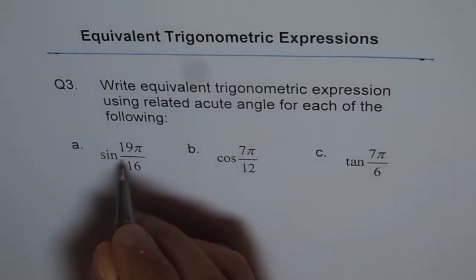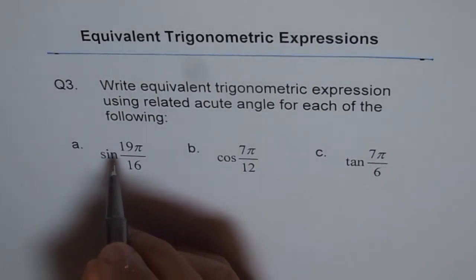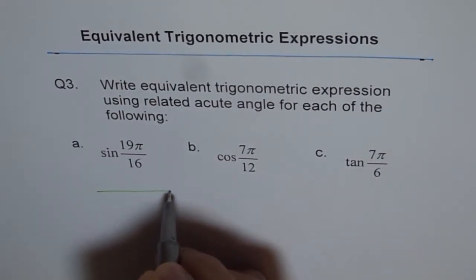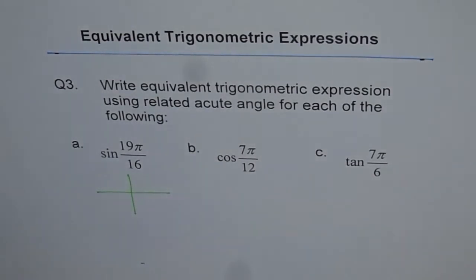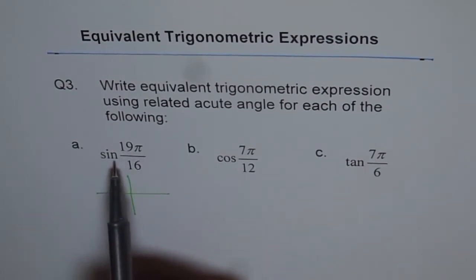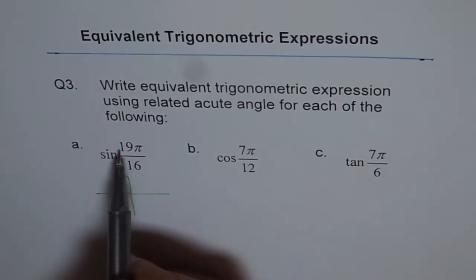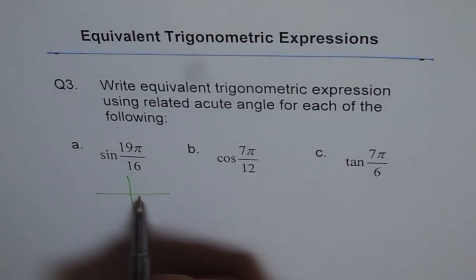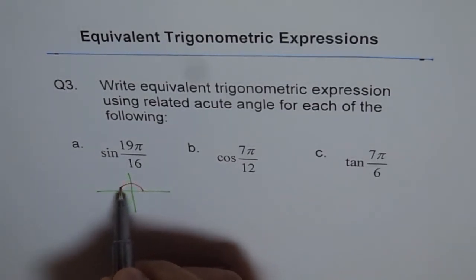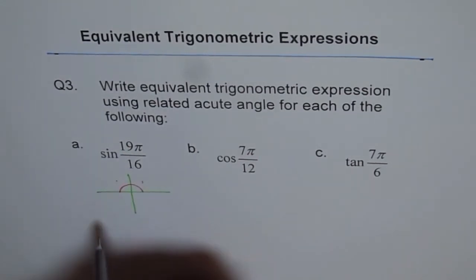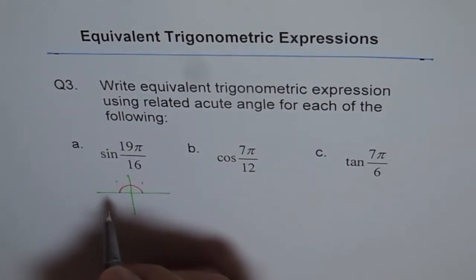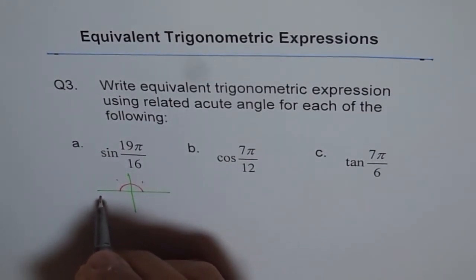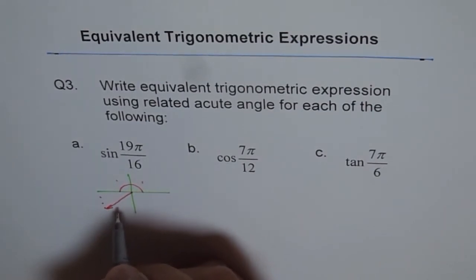So let's do that. First let us try to understand where is sin 19π by 16. And we should find related acute angle. So position where it is gives the sine of sine function. It is 19π by 16. That means this π is divided into 16 parts. So 8 each. Do you see? 8 and 8, 16. But you are on the 19th part. That means 16, 17, 18, 19. So you land up here. Do you understand?